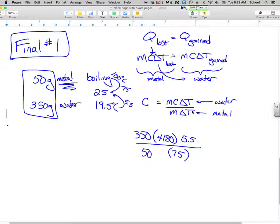So then it's just a matter of plugging in. So 350 times 4180 times 5.5 divided by 50 divided by 75. And that's going to get me 2145.